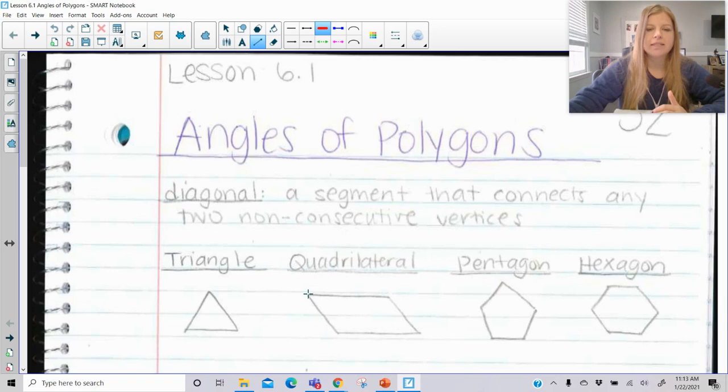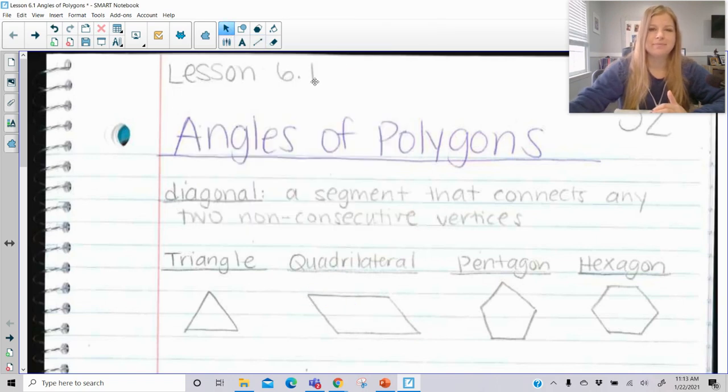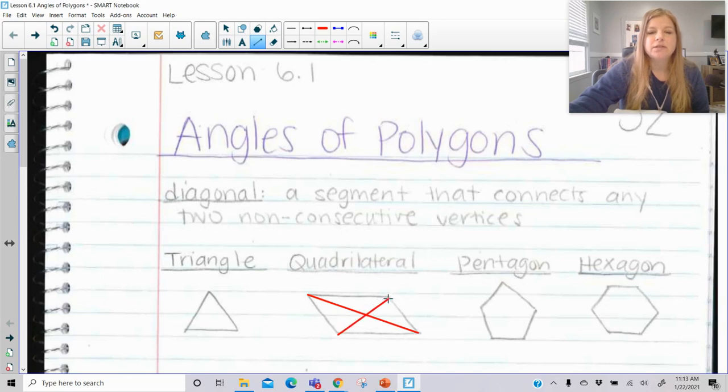A quadrilateral, I can take a vertex here and connect it to this opposite point. So this is a diagonal. It's connecting one vertex to another vertex that's not consecutive. And if I connected it to this point here, that would be on the side and we just don't want that. I can have another diagonal. So a triangle has zero diagonals. A quadrilateral, a four-sided figure, has two.